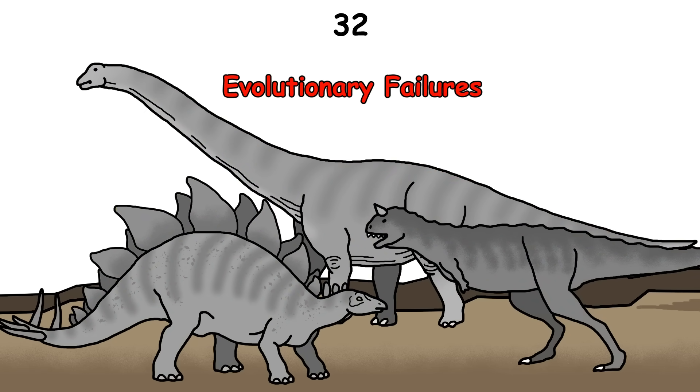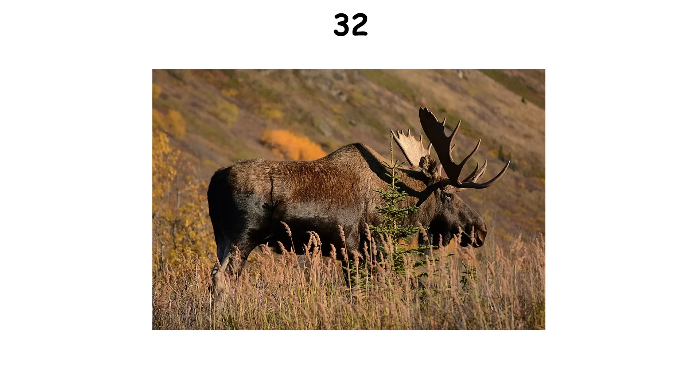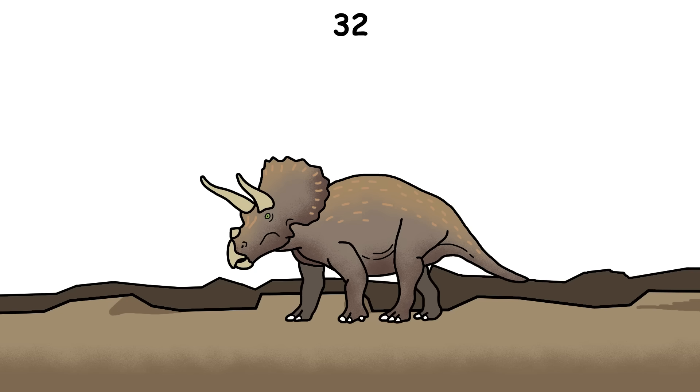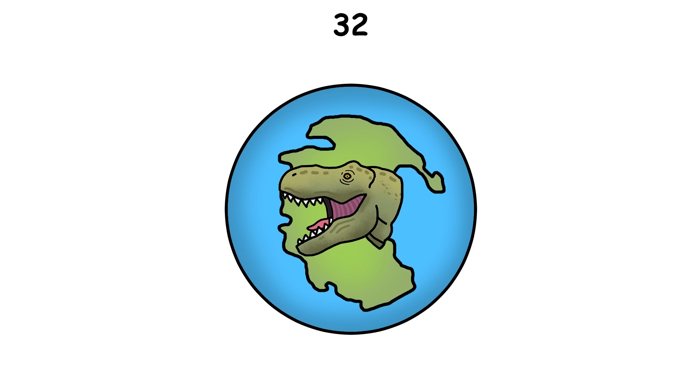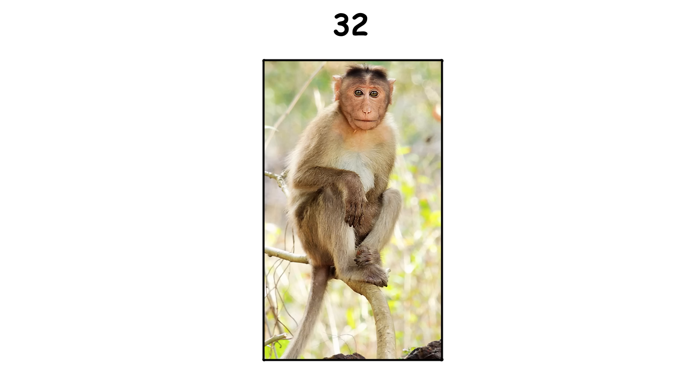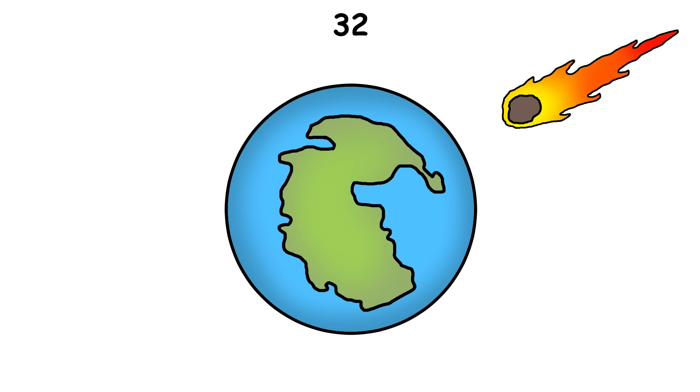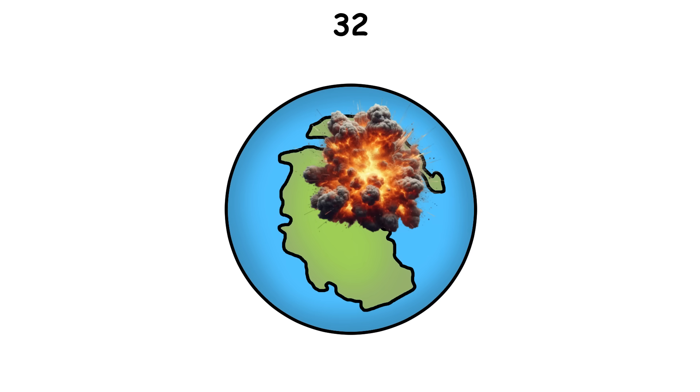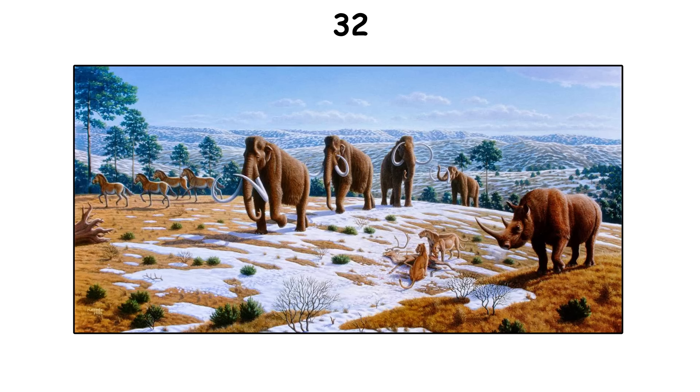The idea that dinosaurs were evolutionary failures or inferior to modern animals is completely wrong. Dinosaurs were incredibly successful, since they ruled the Earth for over 150 million years, far longer than mammals have so far. Some people think mammals are better just because they dominate today, but that's only because a mass extinction wiped out most dinosaurs, giving mammals a chance to take over.